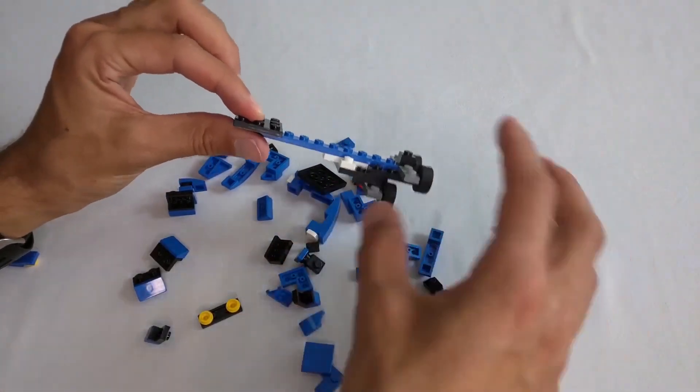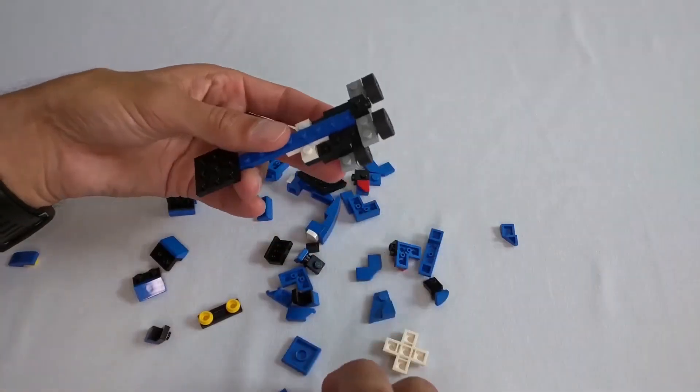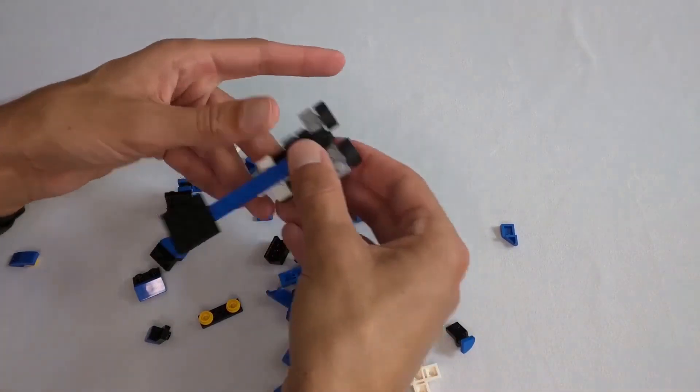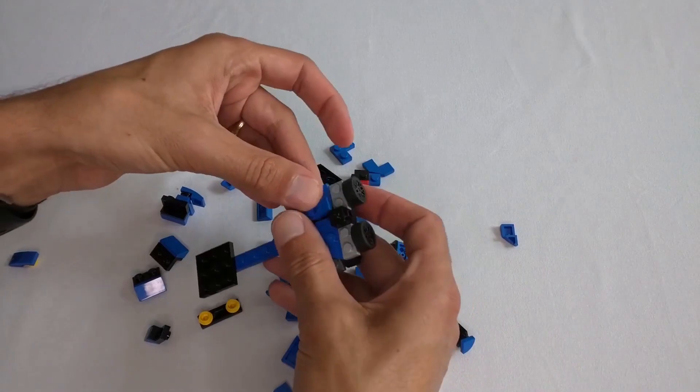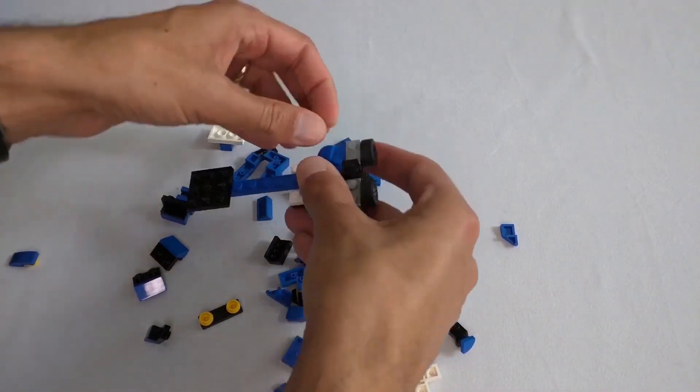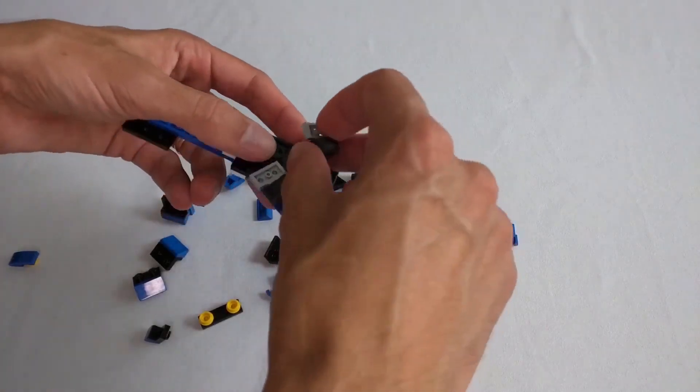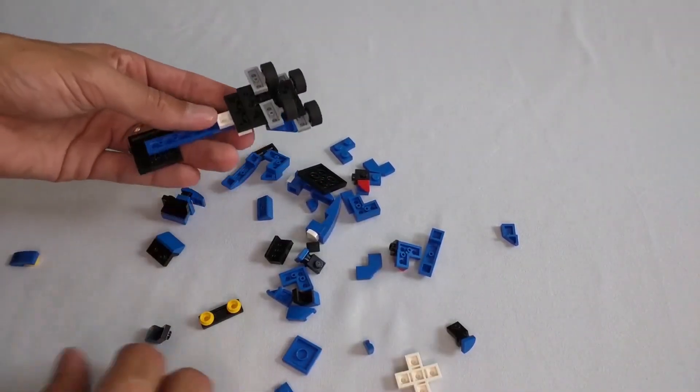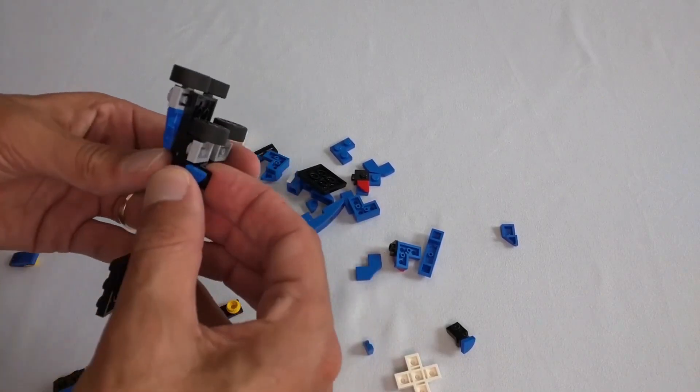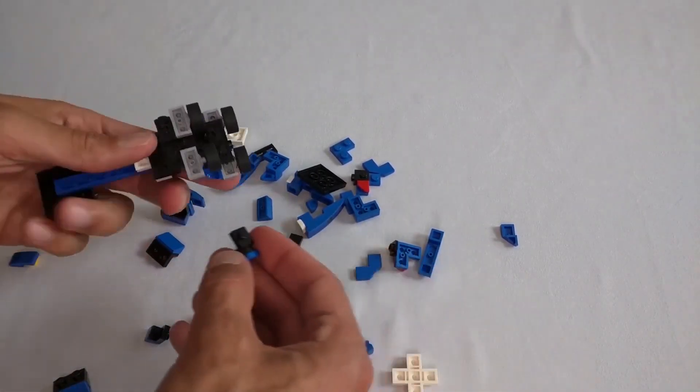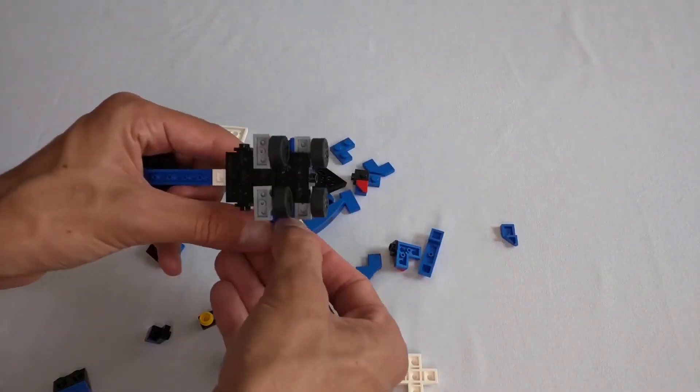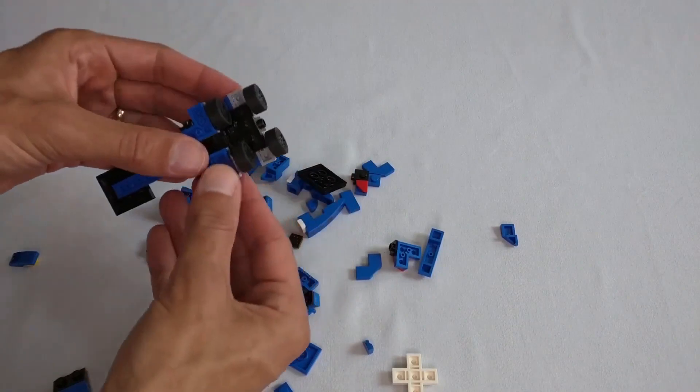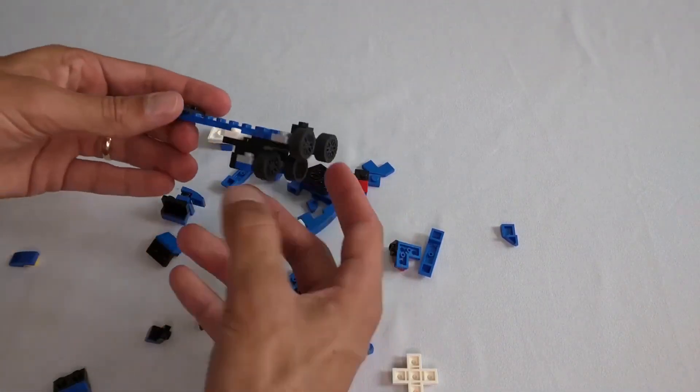And then this will be the bridge right here. Let's turn that into a bridge. First we'll add this here. I have to find a way to attach these better. Maybe we'll do something like this. And that will allow me to attach these. There we go.